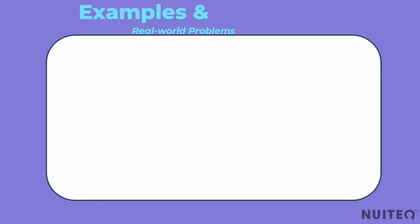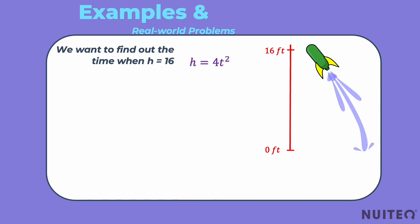Now, let's see how these equations work in the real world. Say you're launching a toy rocket and you want to find out when it will reach a height of 16 feet. The height h in feet at time t in seconds can be given by the equation h equals 4t squared. We want to find out the time when h equals 16, that is 16 equals 4t squared.